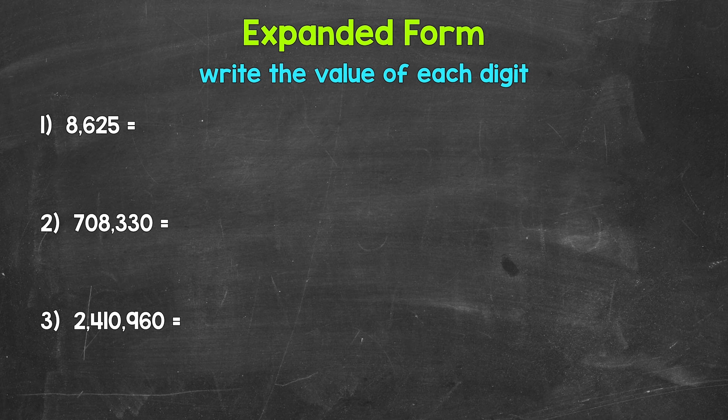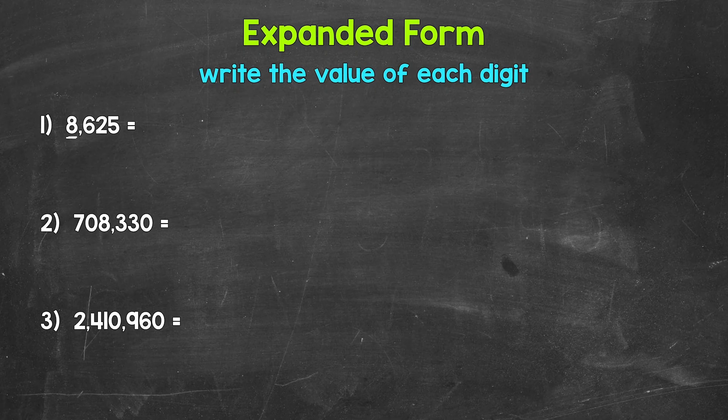Let's jump into our examples, starting with number one, where we have 8,625. To start writing a number in expanded form, we start with the digit furthest to the left, and then we work our way right. So for number one, we start with this eight right here. What's the value of this eight? Think about what place the eight's in. The eight is in the thousands place, so it has a value of 8,000.